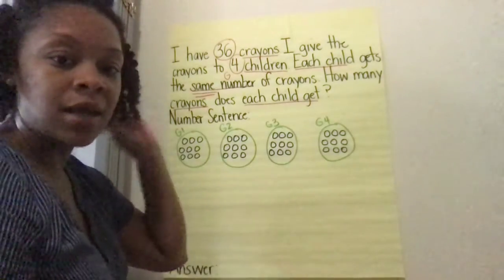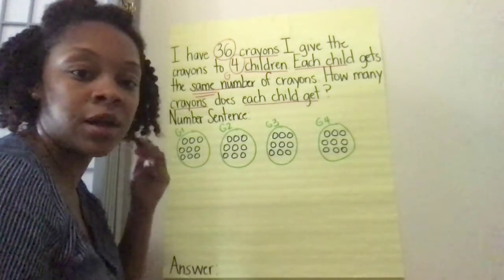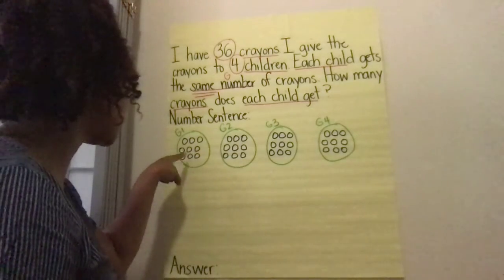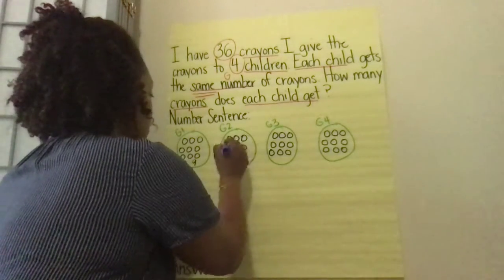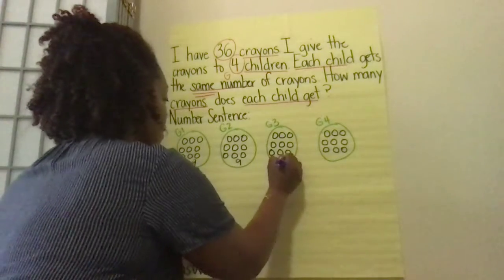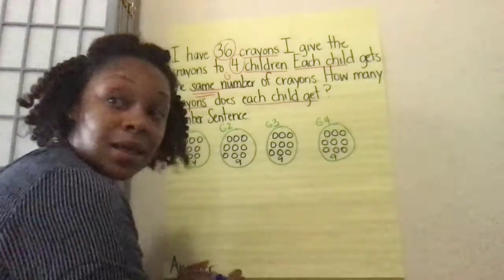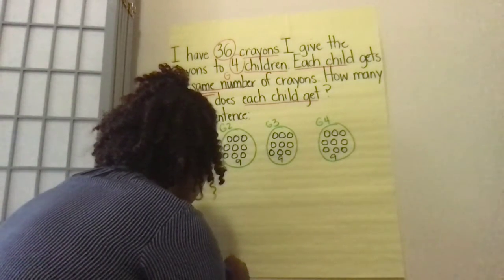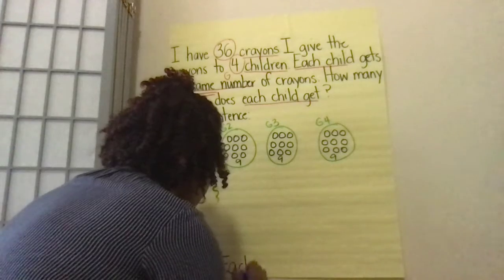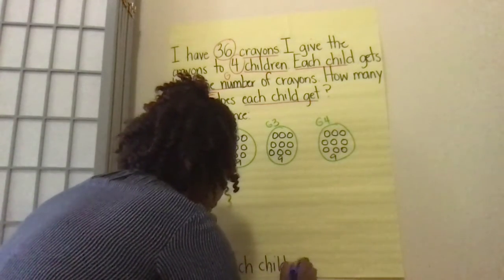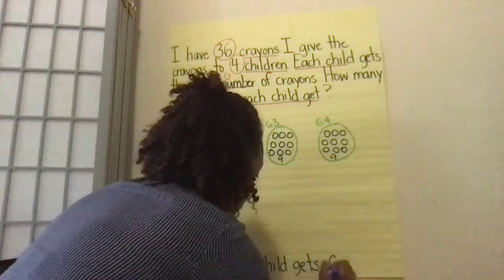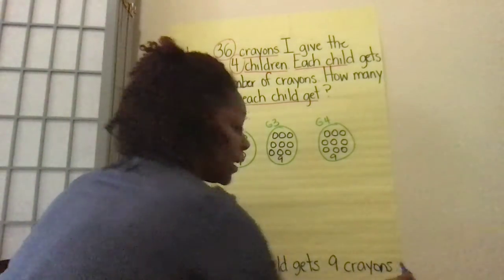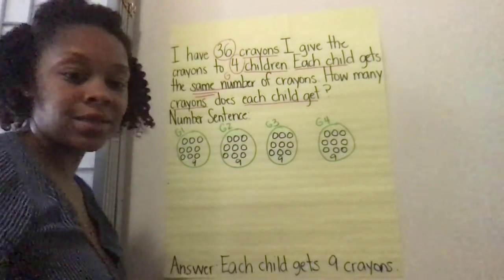I've reached 36. And so my question is asking me: how many crayons does each child get? Let me count: 1, 2, 3, 4, 5, 6, 7, 8, 9. This child has 9. Checking the others — 3, 6, 9 — each group has 9. So each child gets nine crayons.